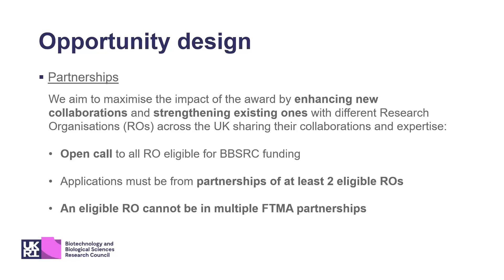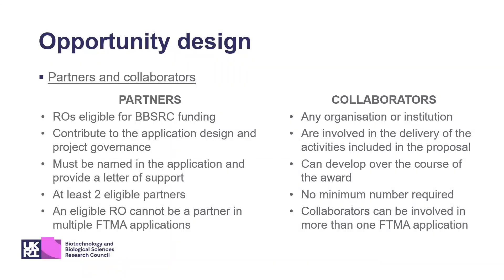One arrow cannot be a partner in multiple FTMA partnerships. In this call it is important to distinguish between partners and collaborators. Partners are arrows eligible for BBSRC funding, must contribute to the application design and project governance, must be named in the application, and must provide direct support to the project. A partnership needs to be at least two partners, with no maximum number. An eligible arrow cannot be a partner in more than one FTMA application.